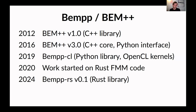Then in 2020, Sri started his PhD and started working on a really good FMM code written in Rust that he presented at the workshop last year. And recently, a couple of months ago, we released BEMPP-RS version 1.0, which is our BEM library built in Rust, starting to use the FMM library to accelerate some of our boundary element methods.